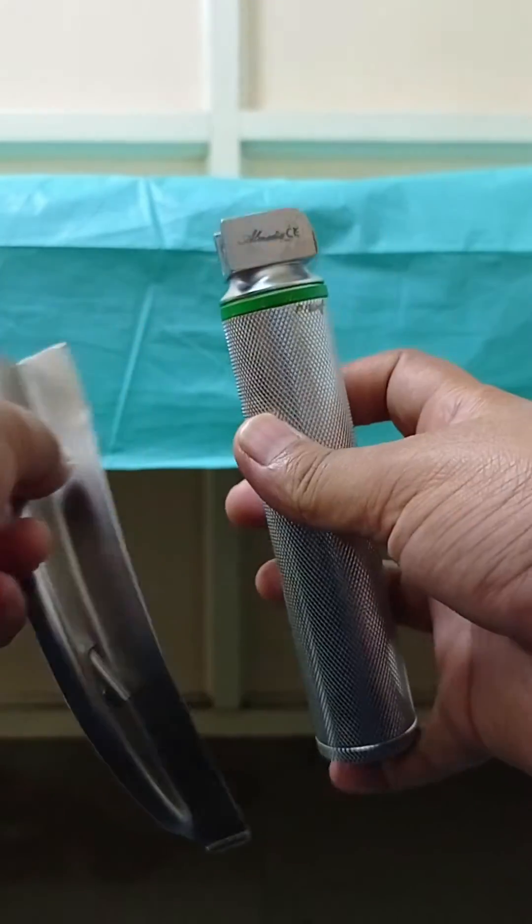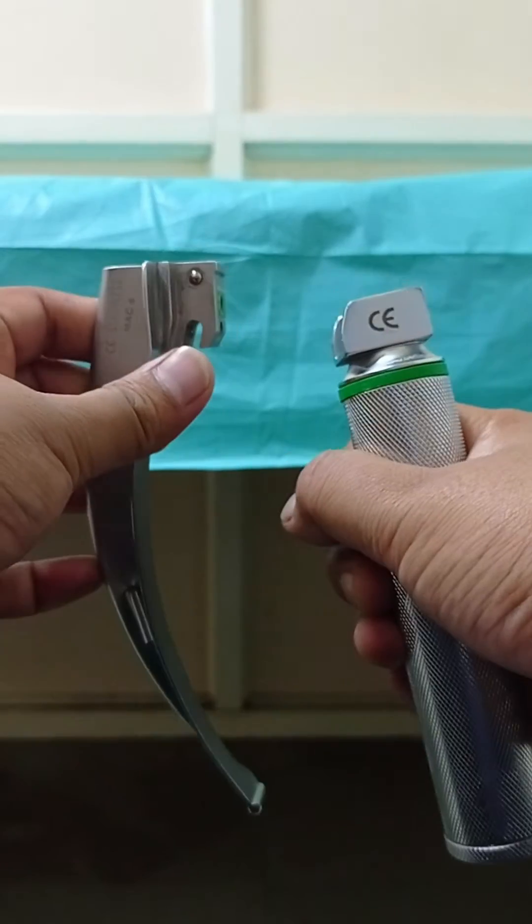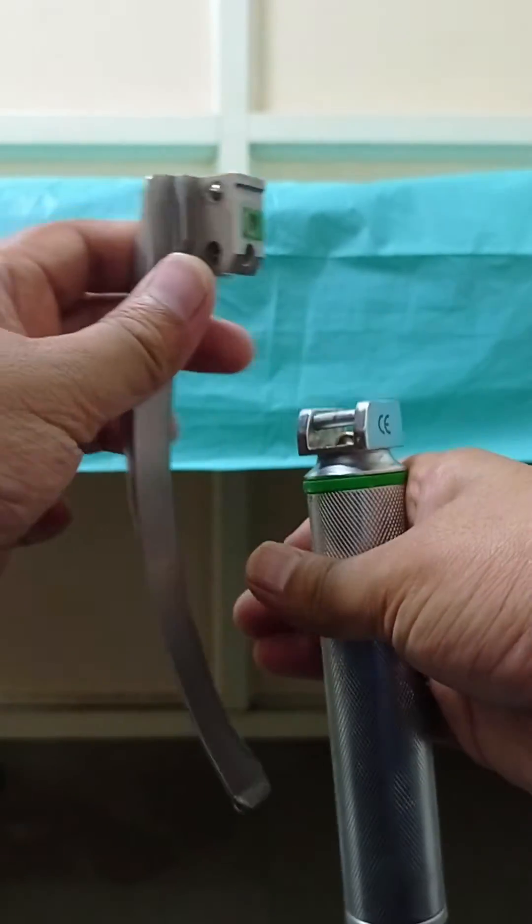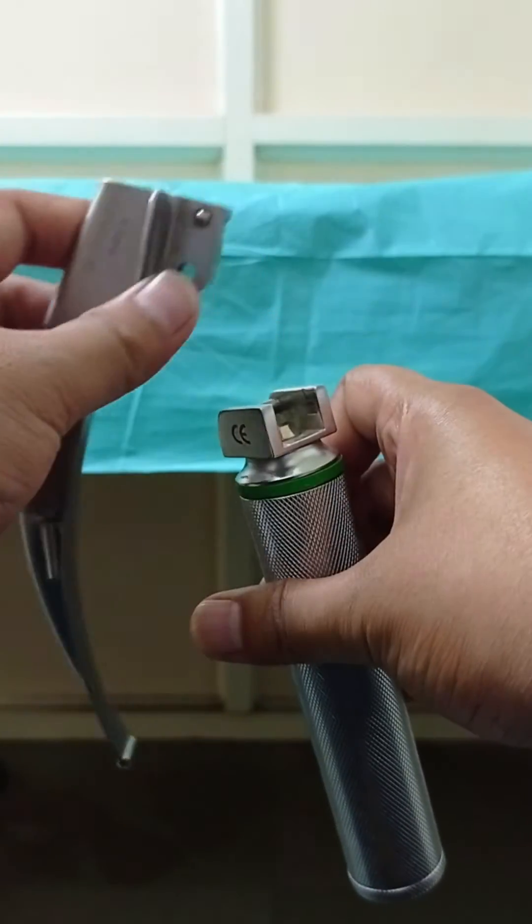Now we will try to assemble the laryngoscope. Hold the handle in one hand firmly. Then at this bar, try to hit the laryngoscopic blade at an angle.